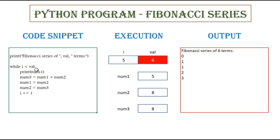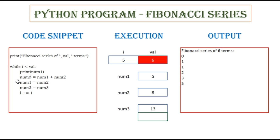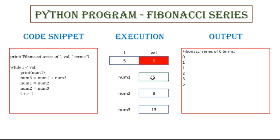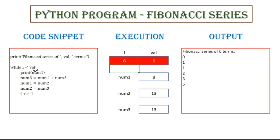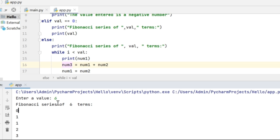While 5 less than 6 — that is true. So print num1, the value in num1 is 5, so 5 gets printed on the screen. Num3 equals num1 plus num2, so 8 plus 5, which is 13. Num1 equals num2, so num1 is now going to hold the value of 8. Num2 equals num3, so num2 is going to be 13. And i is incremented by 1, so now the value of i will be 6. While 6 less than 6 — no, that is not true. So the control exits from the while loop, and this is the series that gets printed on the screen.